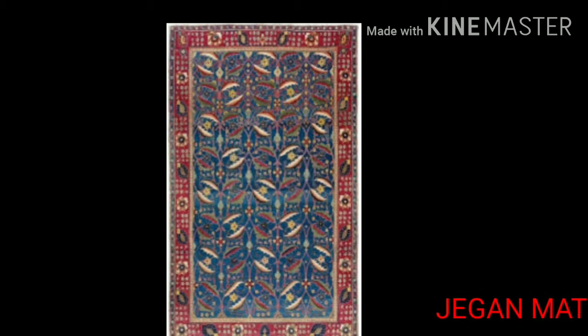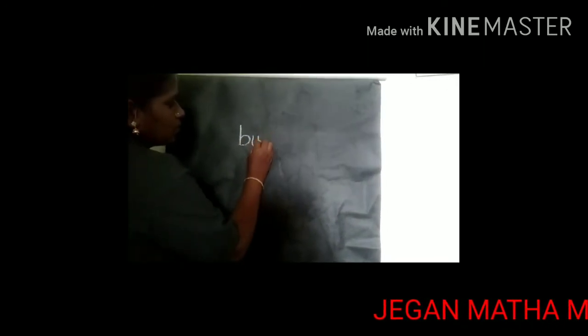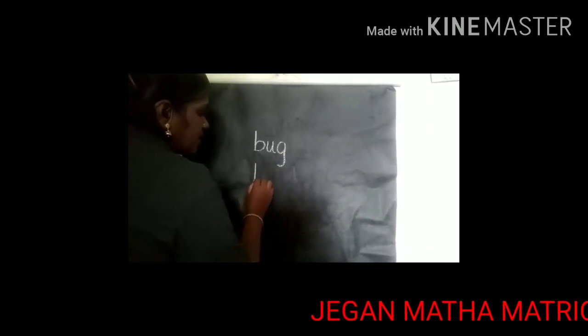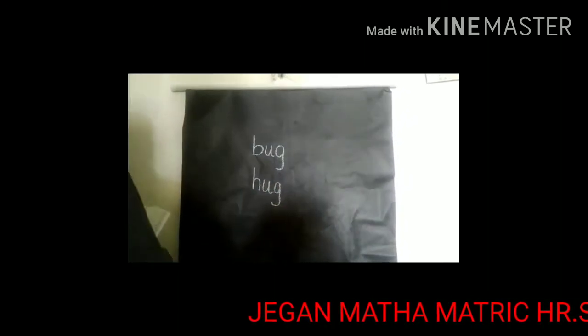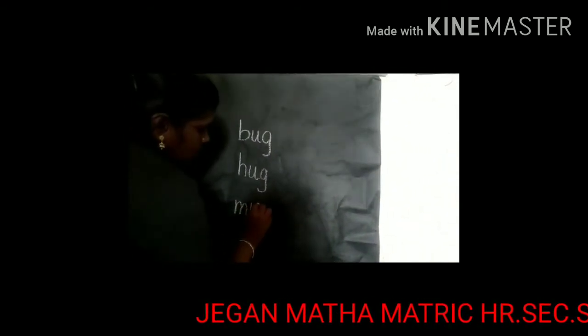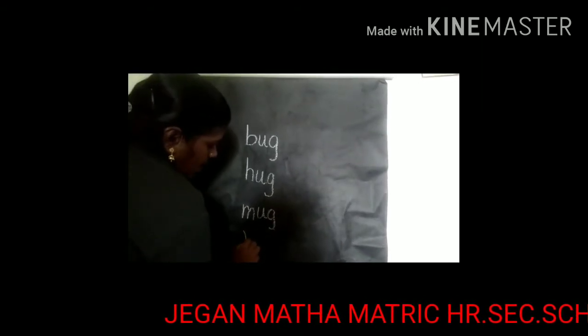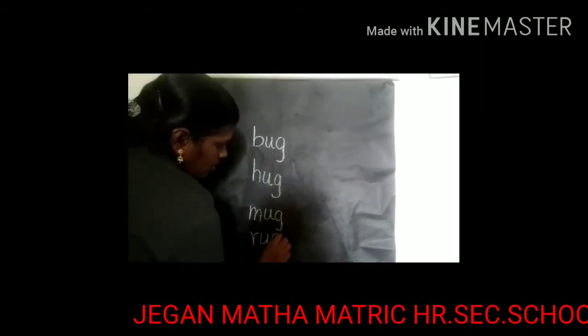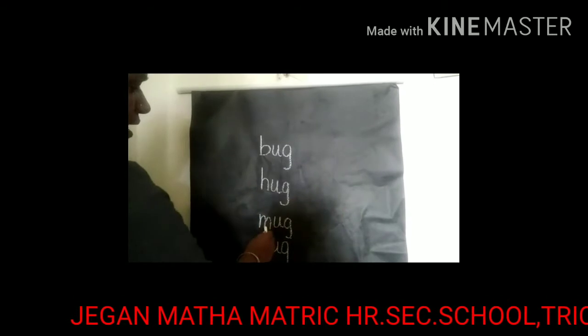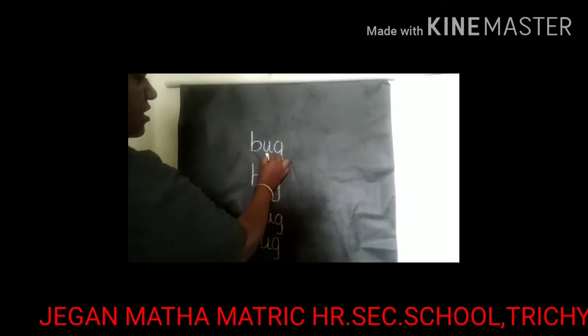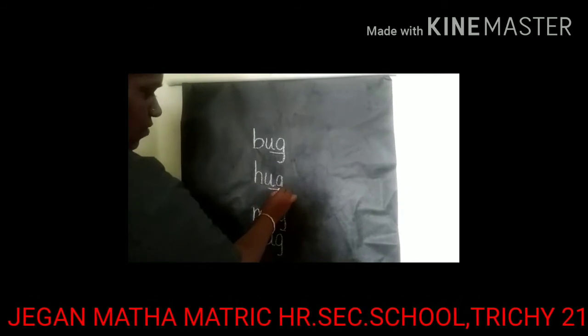Now see the words: B, U, G — Bug. Next word: H, U, G — Hug. Next word: M, U, G — Mug. Then last word: R, U, G — Rug. Now see the four words — Bug, Hug, Mug, Rug. These four words are all ending with the 'ug' sound.